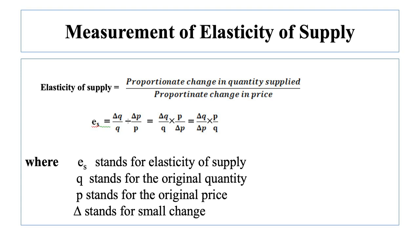Next, we will study the measurement of elasticity of supply. Elasticity of supply is equal to proportionate change in quantity supplied divided by proportionate change in price. It can also be written as: Es = (ΔQ/Q) ÷ (ΔP/P), which equals (ΔQ/Q) × (P/ΔP). It can also be written as (ΔQ/ΔP) × (P/Q), where Es stands for elasticity of supply, Q stands for the original quantity, P stands for the original price, and ΔP stands for small change in price.